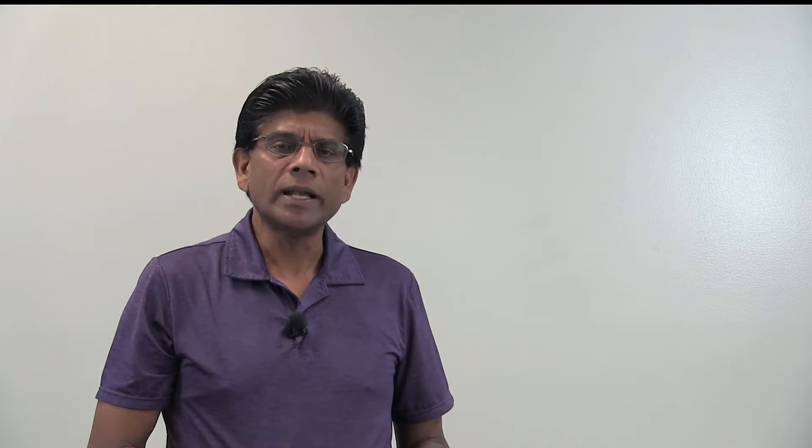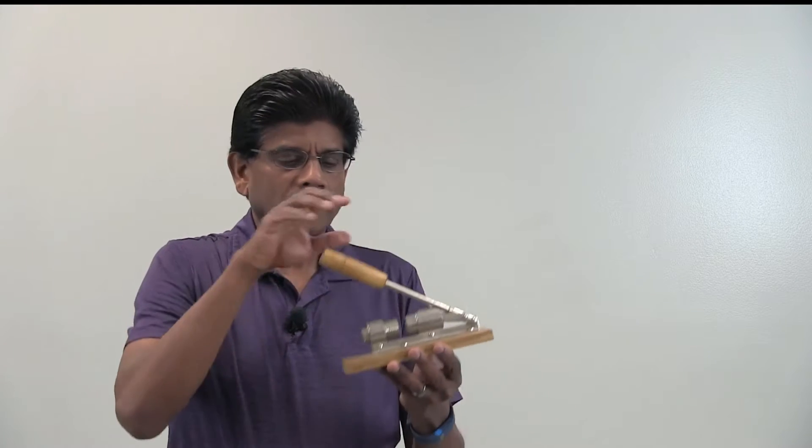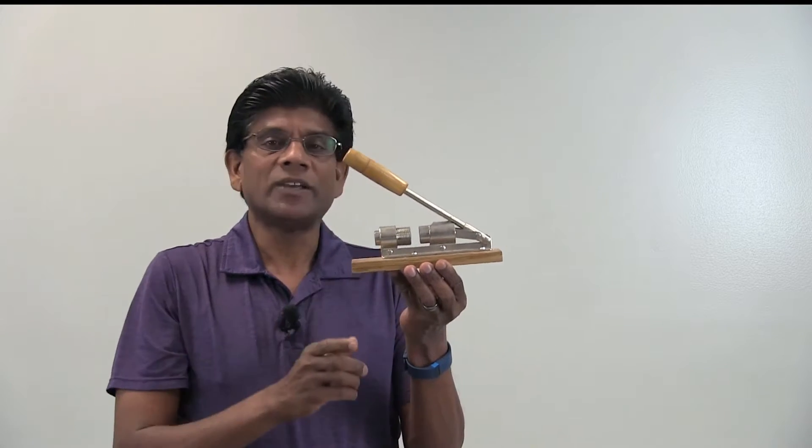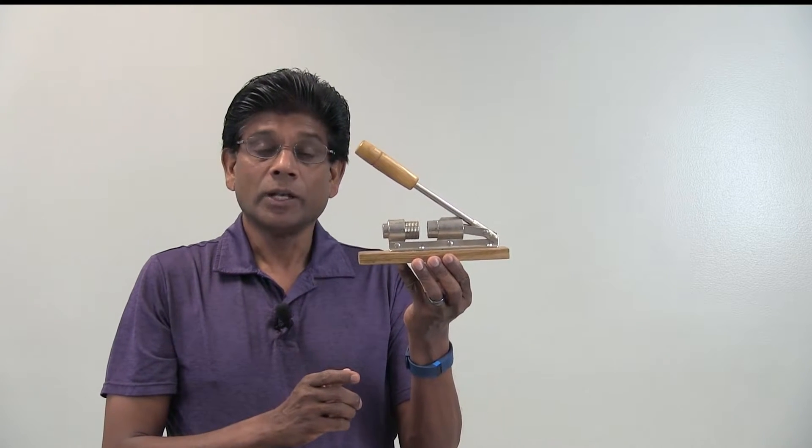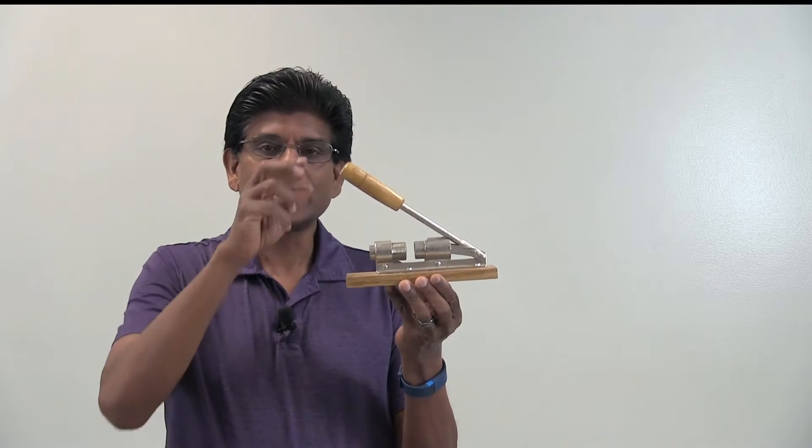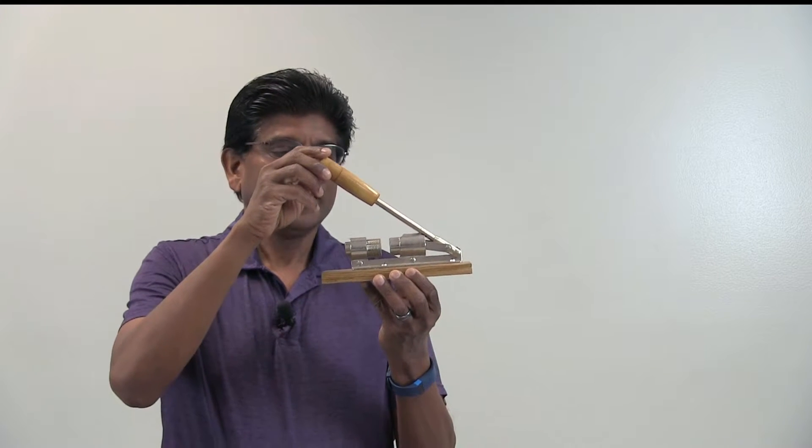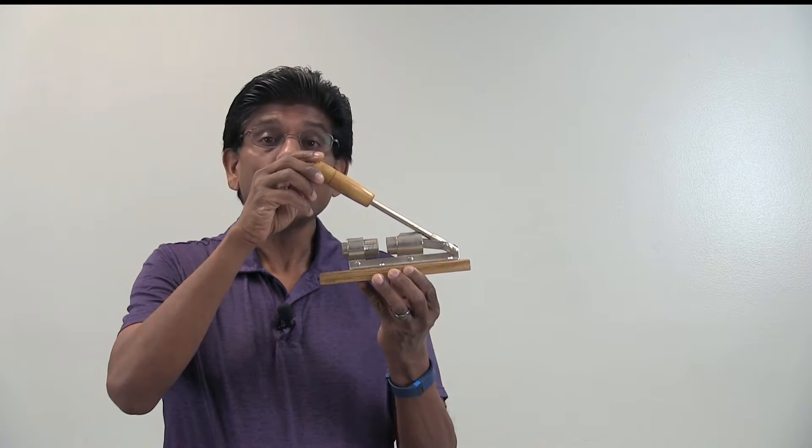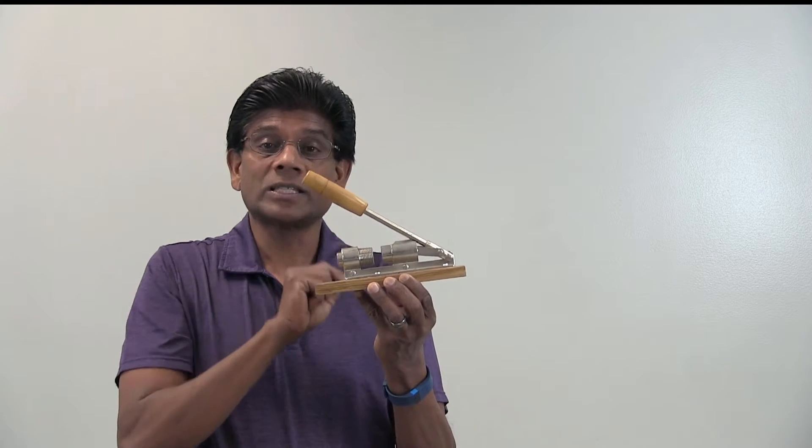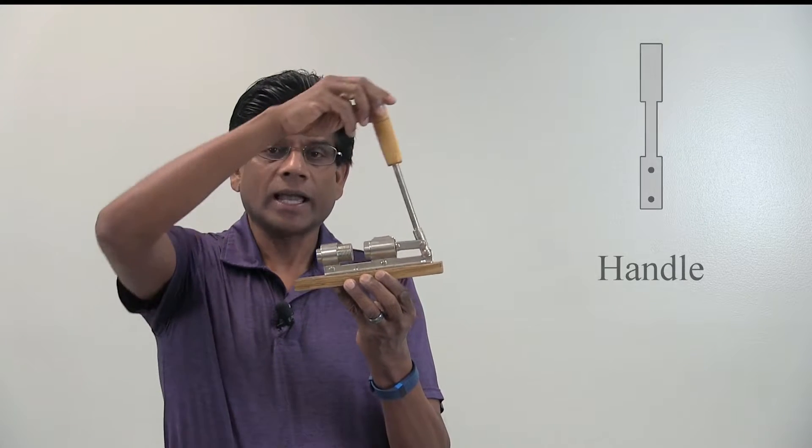Now let's take a look at another device, nutcracker. You probably have a device like this in your kitchen. This is useful in crushing nuts. This device, although looks very different from the locking player, is very similar. It has a handle,